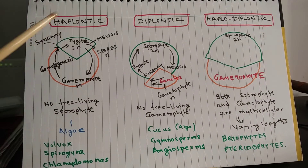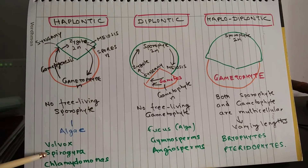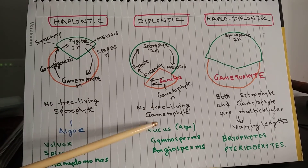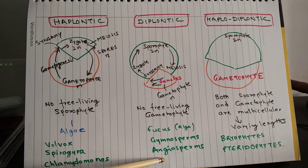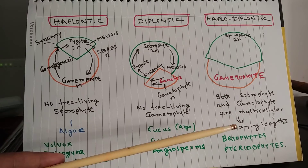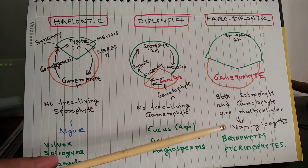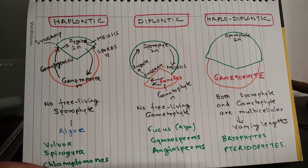To summarize: haplontic type is found in most of the algae; diplontic type is found in one alga — Fucus — and in gymnosperms and angiosperms; and haplodiplontic type of alternation of generation is seen in bryophytes and pteridophytes. That's all for this lesson. Thank you.